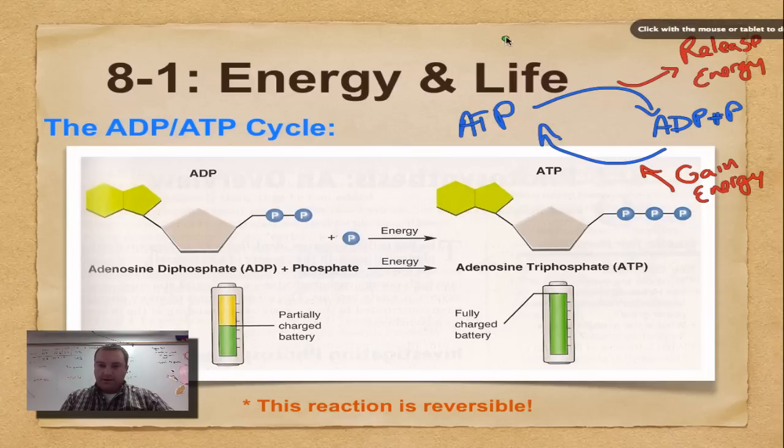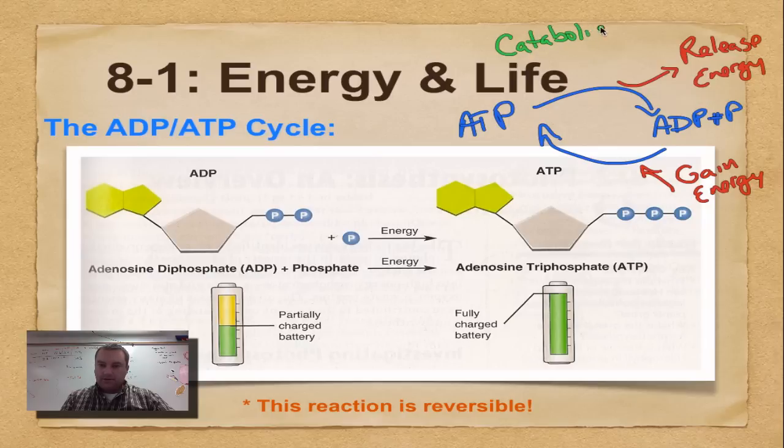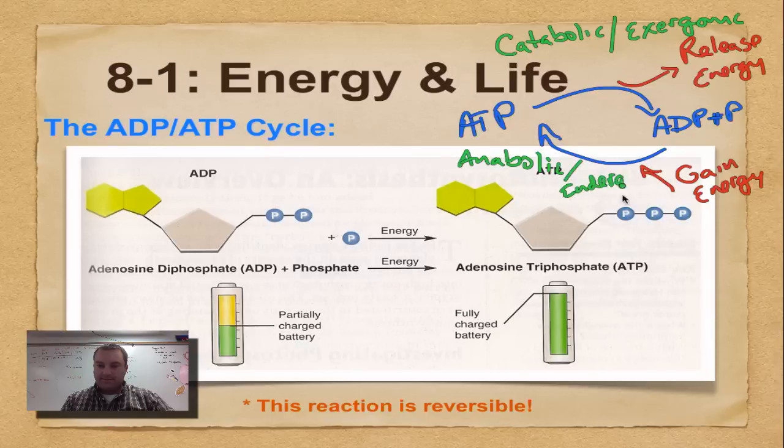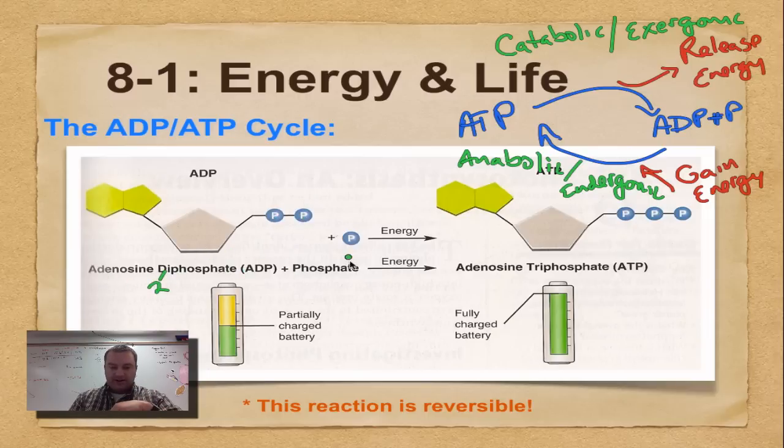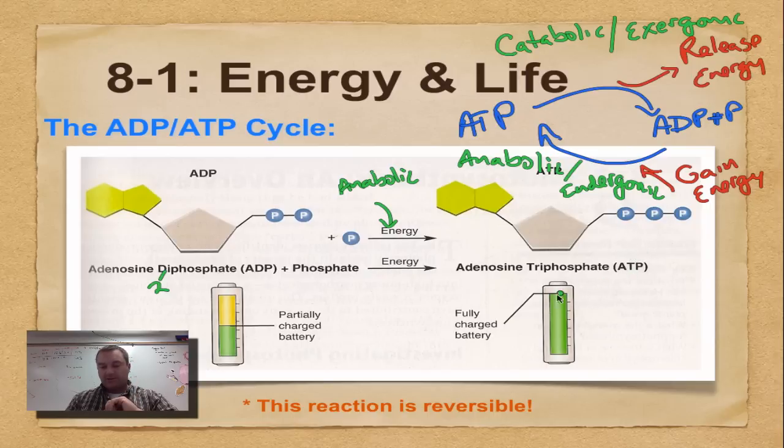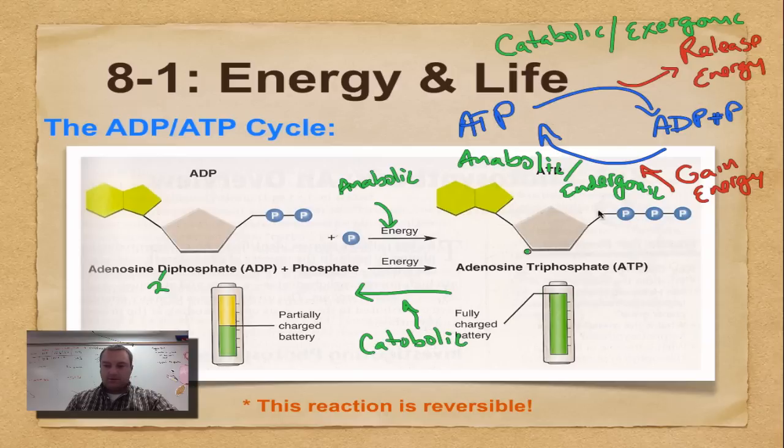So this arrow right here is going to be the catabolic slash exergonic, because you're releasing energy. And then this arrow right here, that's your anabolic slash endergonic. Adenosine diphosphate - di means two. So you have one, two phosphate, and there's a phosphate that broke off. So you add energy, anabolic, and that makes ATP triphosphate. This is like a fully charged battery when you're at your ATP. If we go this way, we would be catabolic or exergonic, and your battery's half charged. In other words, you spent some of it and used it.